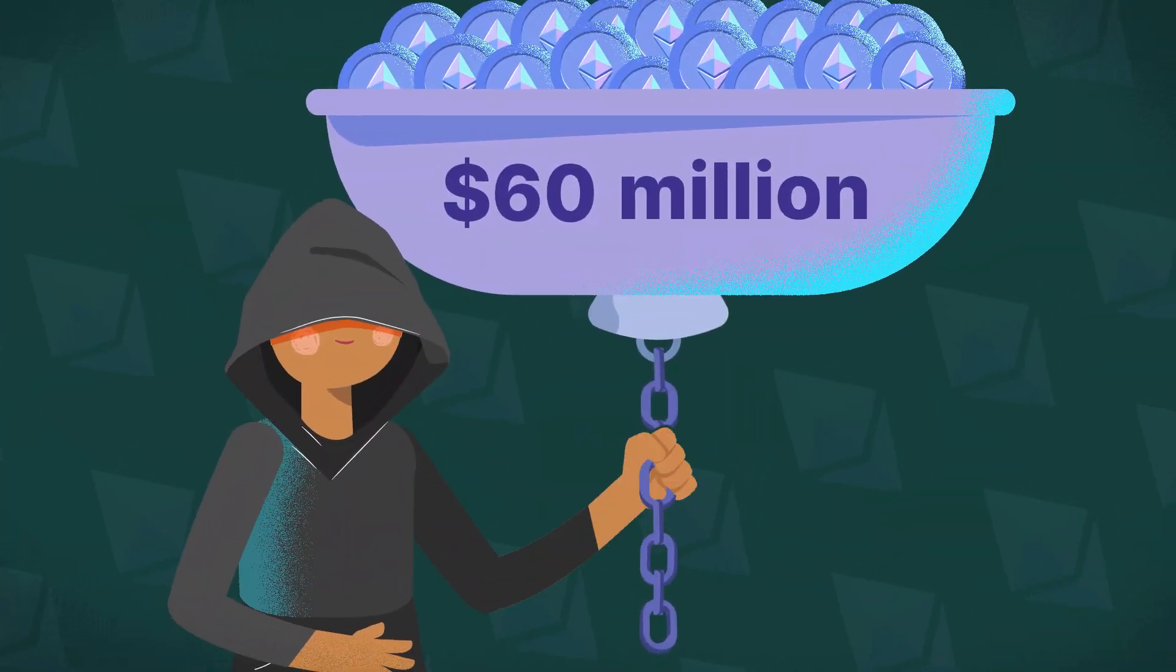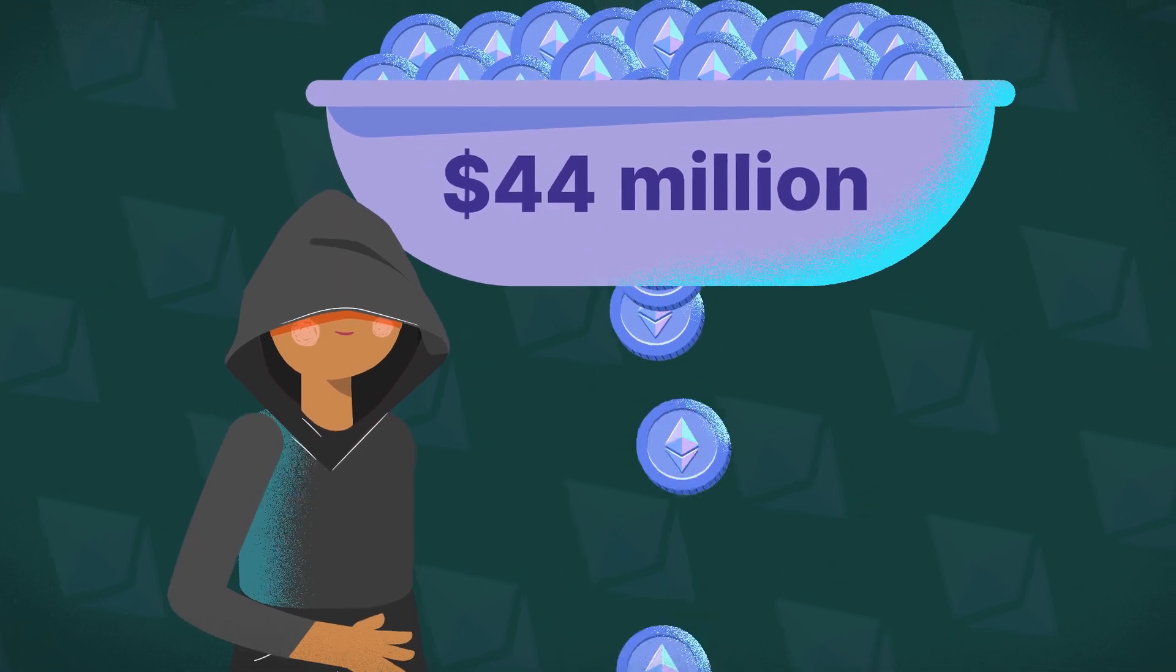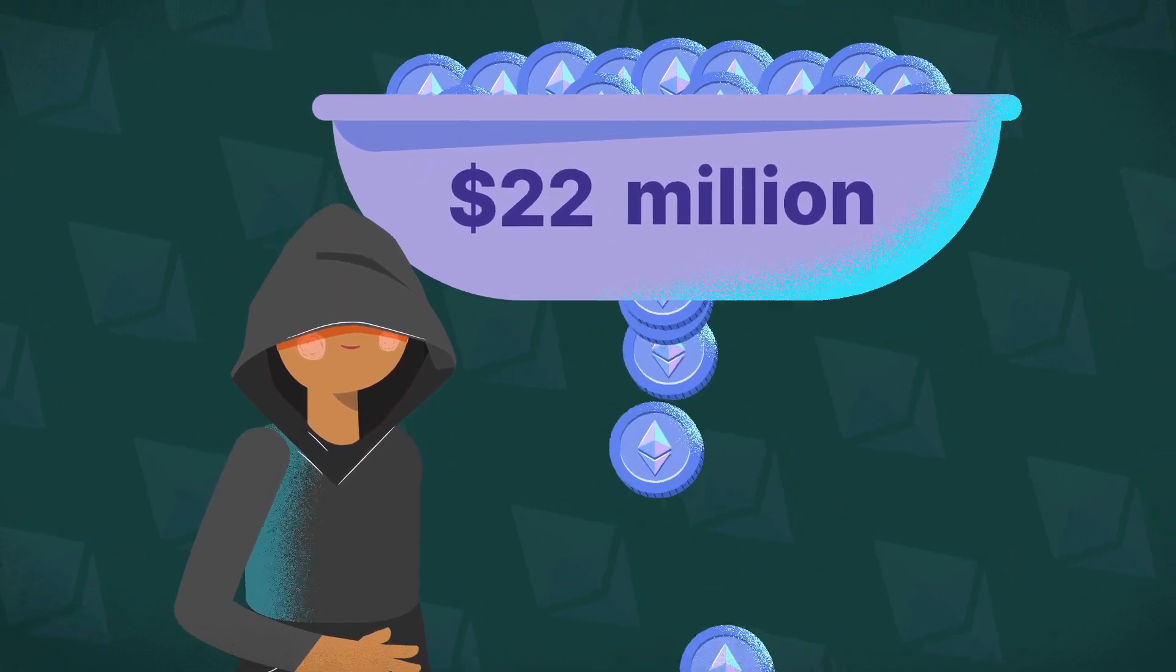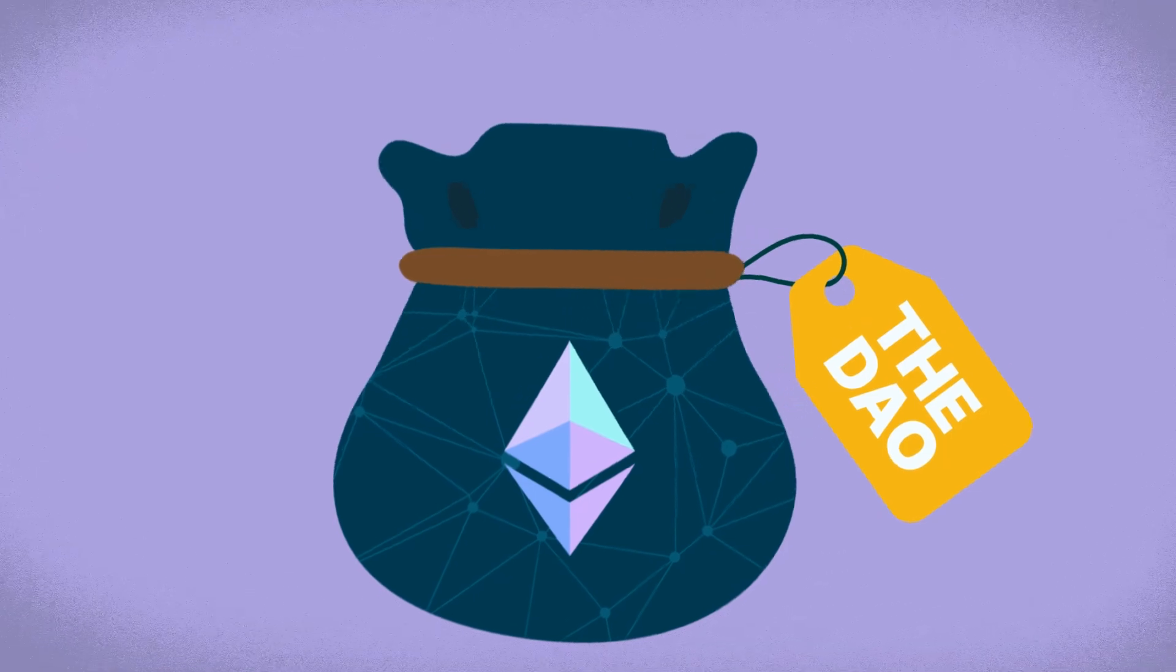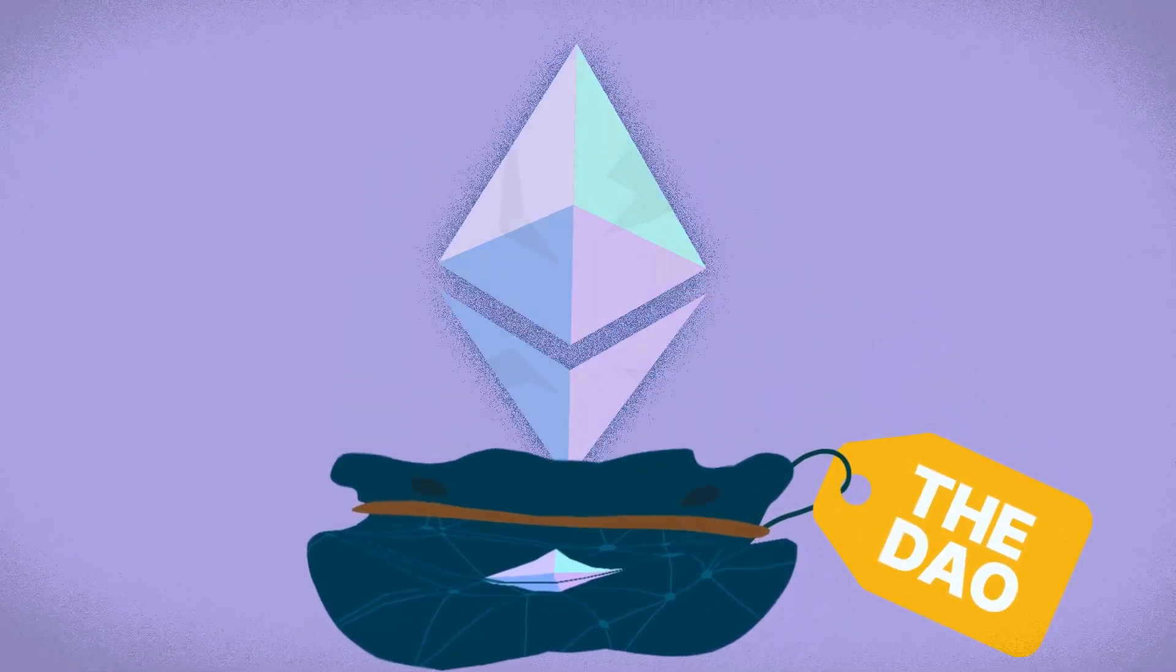In the course of a few weeks, the hacker gradually drained $60 million worth of ETH, while a massive blow of confidence was dealt to not just the DAO, but Ethereum as a whole.